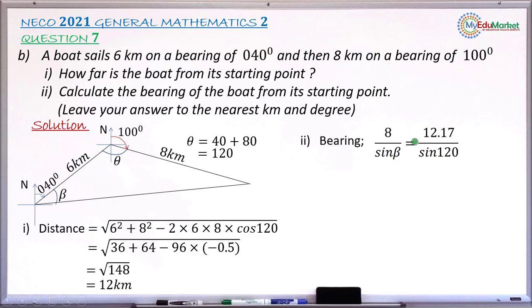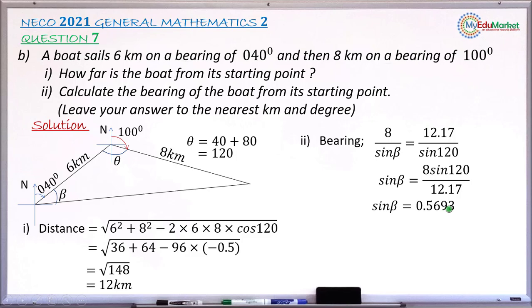Using 8 divided by sine beta equals 12.17 divided by sine 120 — where 12.17 is the unrounded value of the square root of 148. Making sine beta the subject by cross-multiplying gives sine beta equals 8 times sine 120 divided by 12.17. Computing this correctly gives sine beta equals 0.56930.